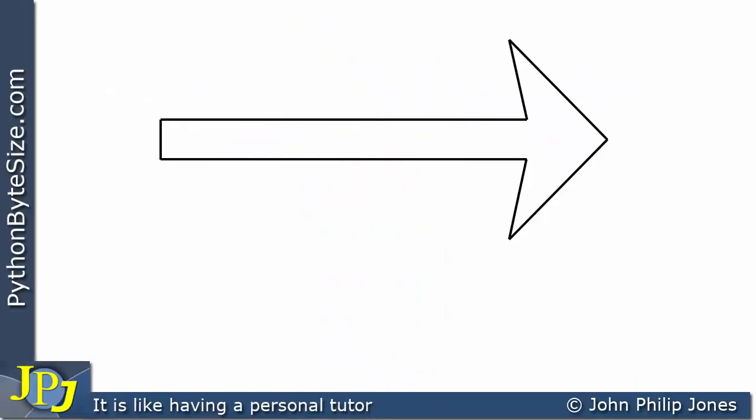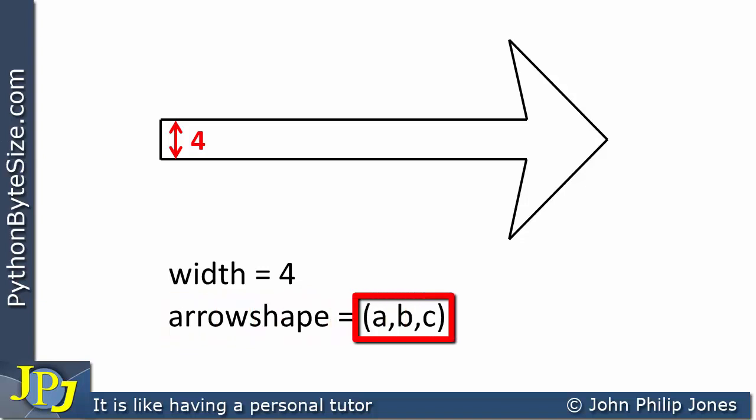When creating a line, we use the create_line method, which we invoke and pass arguments to. One of the arguments we're interested in is the width named argument — we assign that 4, and that sets the width of the line as shown. We will now look at the arrow shape named argument, where we assign it a tuple. I've put a, b, c in there — they represent integers that make up the numbers within the tuple that set the arrow shape.